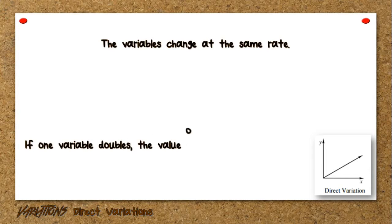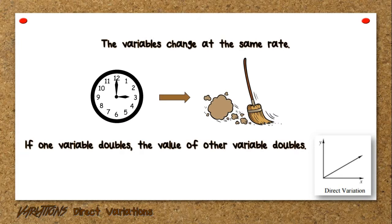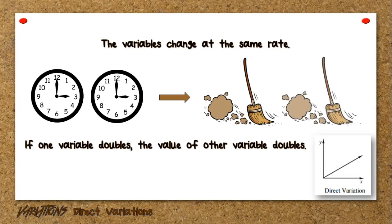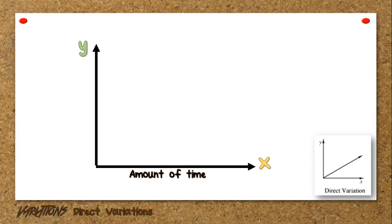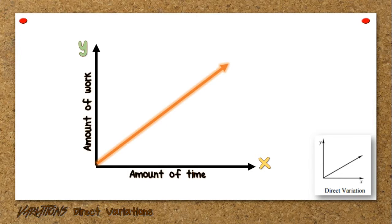Direct variation also states that the variables change at the same rate. If one variable doubles, the value of the other variable doubles. If one triples, the other triples. For example, if your time in cleaning is increased, then you can not only sweep the first floor of your house, but also the second. Graphically, let variable x be the amount of time and variable y be the amount of work. As x increases, y also increases. The line passes through the origin with slope k, the constant of variation.